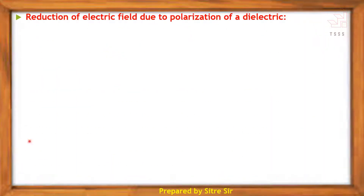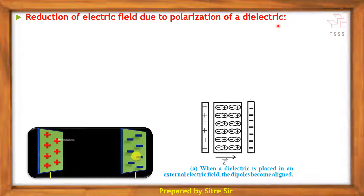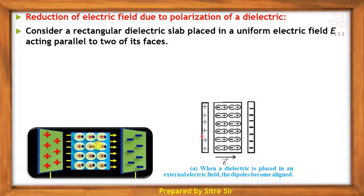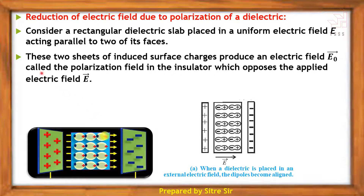The next point is the reduction of electric field due to polarization of a dielectric. Consider a rectangular dielectric slab placed in a uniform electric field E acting parallel to two of its faces. The induced surface charges produce an electric field E₀, called the polarization field, inside the insulator, which opposes the applied electric field E.